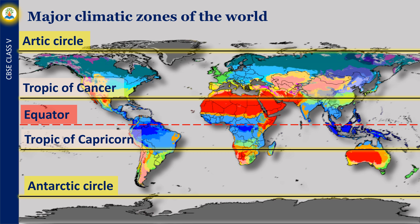In a previous video, we learned about the equator, Tropic of Cancer, Tropic of Capricorn, Arctic Circle, and Antarctica. Observe the location of our country India and think about the climate in India.